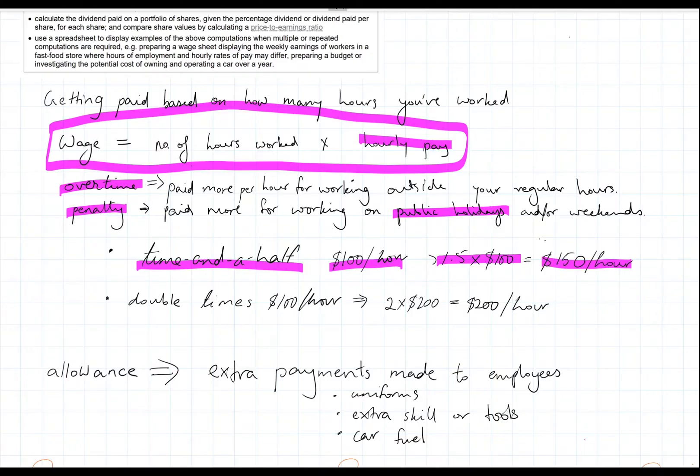And sometimes it can also be double times pay. So if your regular pay is $100, you'll get paid 2 times that. It'll be 2 times $100, which is $200 an hour.